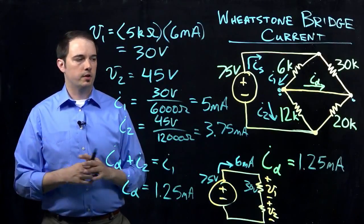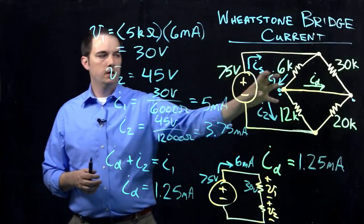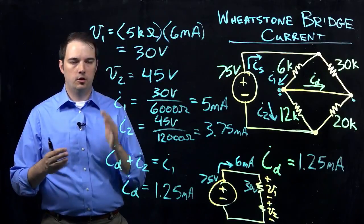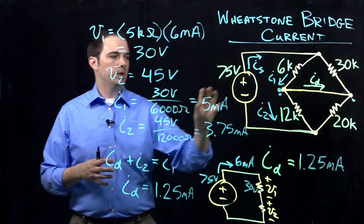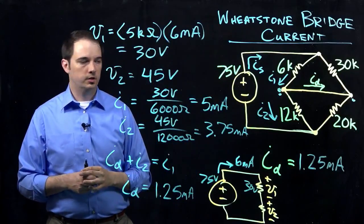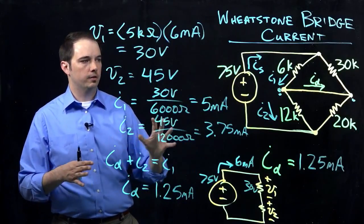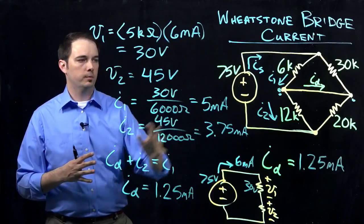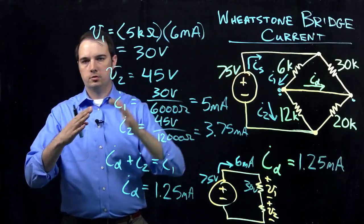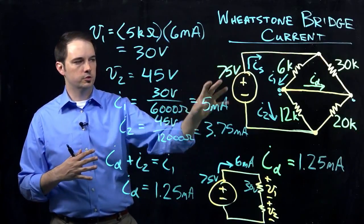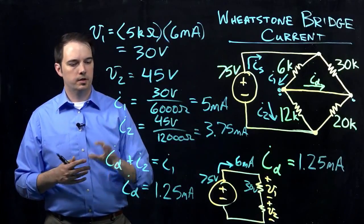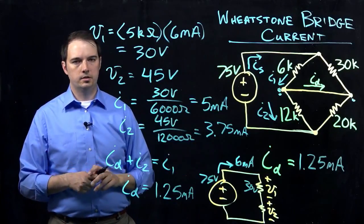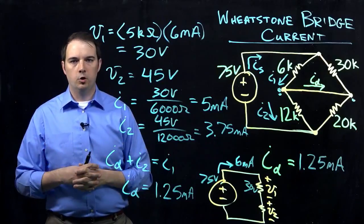A quick recap: we had an ammeter in the middle of the circuit, but because there was no voltage drop across it, we removed it and treated it as a short circuit. That allowed us to find the equivalent resistance for the whole network and calculate the total source current. From there, we subdivided to find the voltages across each branch, then the current through each resistor, and finally used KCL to find the current ID = 1.25mA across the middle branch. Hope to see you in the next video.